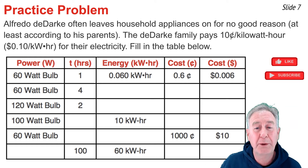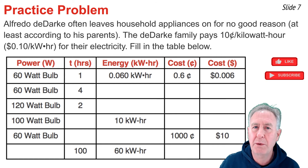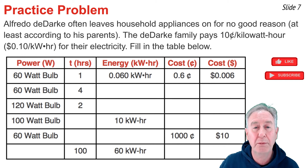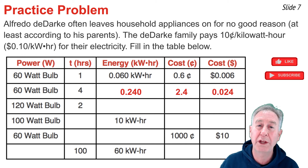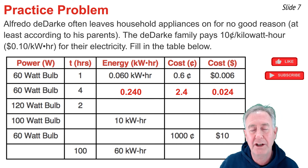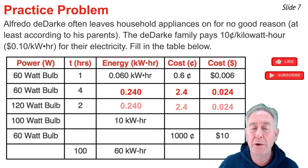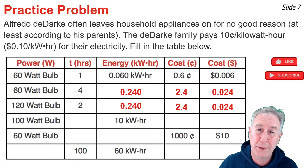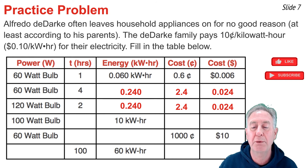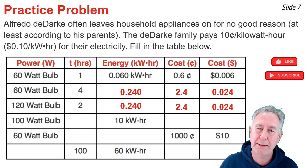Row 1 is done. For row 2, energy equals power times time. The power is 60 watts, or 0.060 kilowatts. Multiplied by 4 hours gives 0.240 kilowatt-hours of energy. At 10 cents per kilowatt-hour, the cost is 2.4 cents. Row 3 uses a 120-watt bulb for 2 hours: 0.120 kilowatts times 2 hours equals 0.240 kilowatt-hours, and the cost calculation follows the same process as row 2.